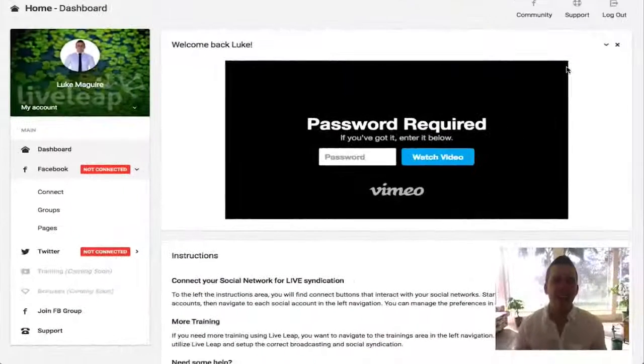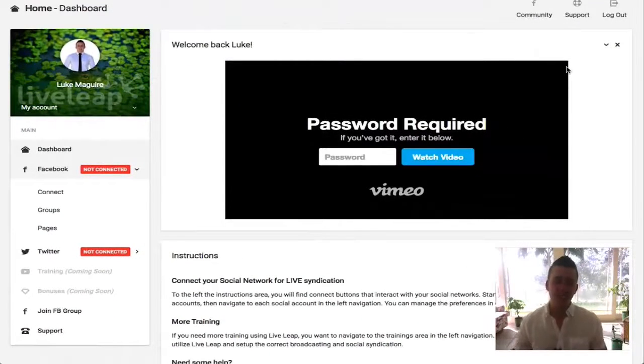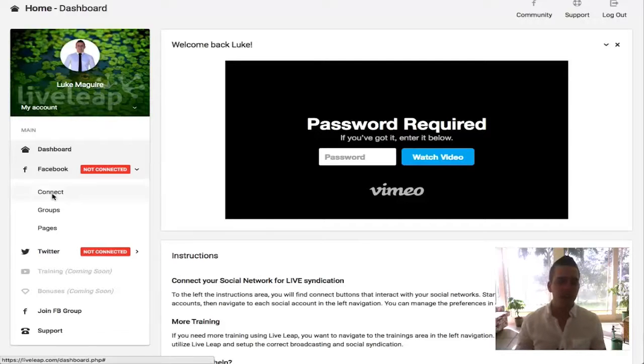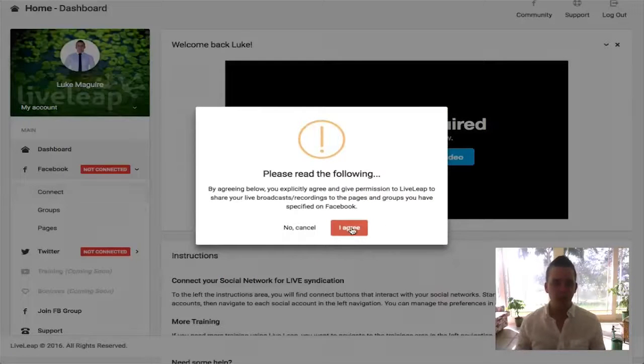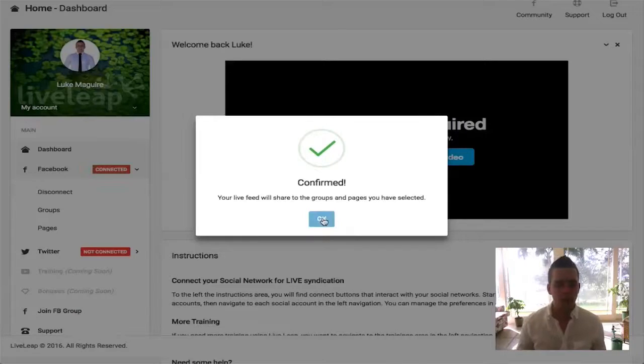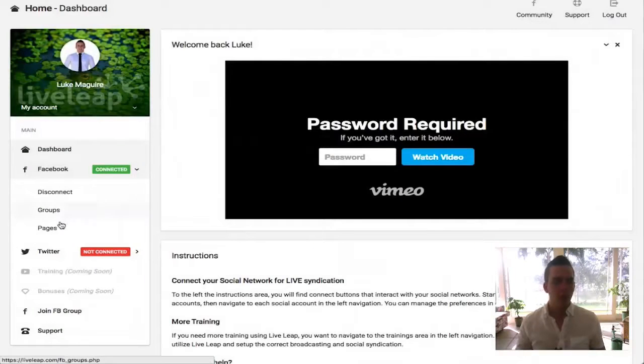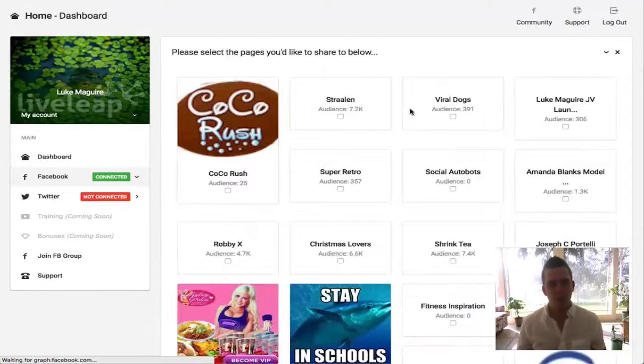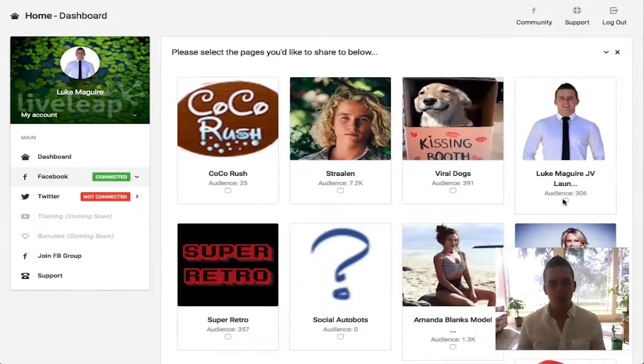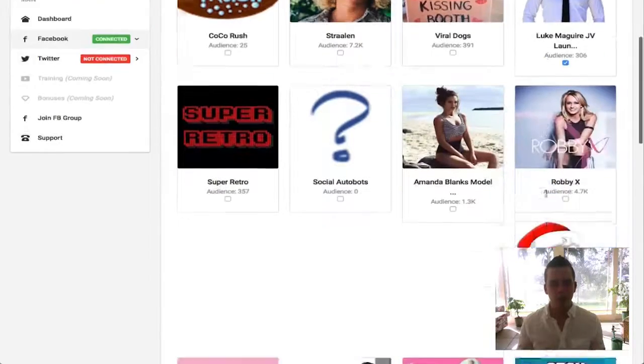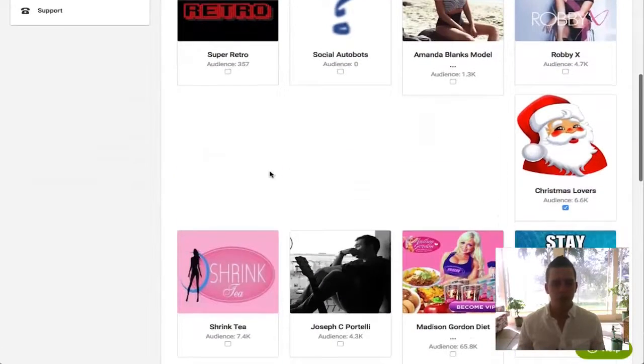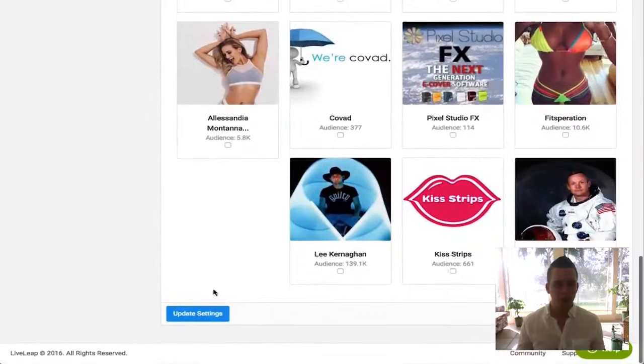Alright guys, let me show you how easy this is to set up and completely leave it on autopilot in the background forever. We're gonna connect our Facebook account, hit I agree that I want to share it across multiple pages and groups. Then I'm gonna go over to our pages and select a few pages we want to go live on. I'm gonna select my JV one, select this random Christmas one I've got going on here, hit update and save.